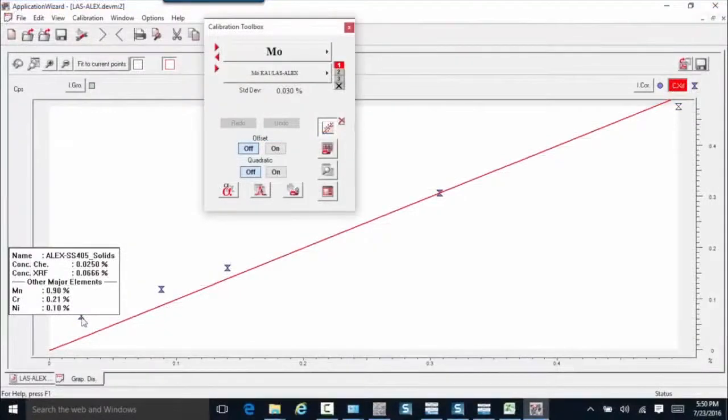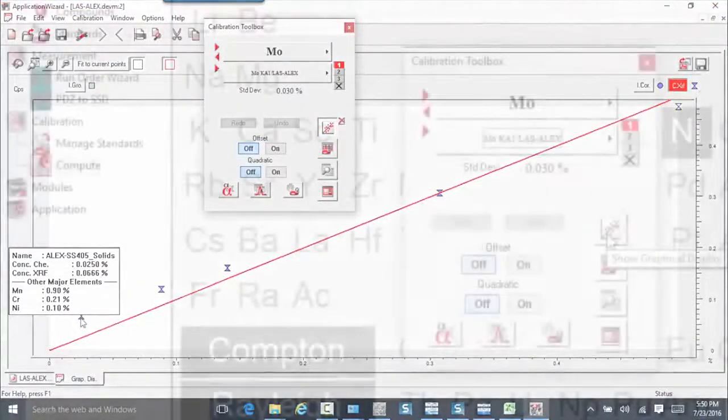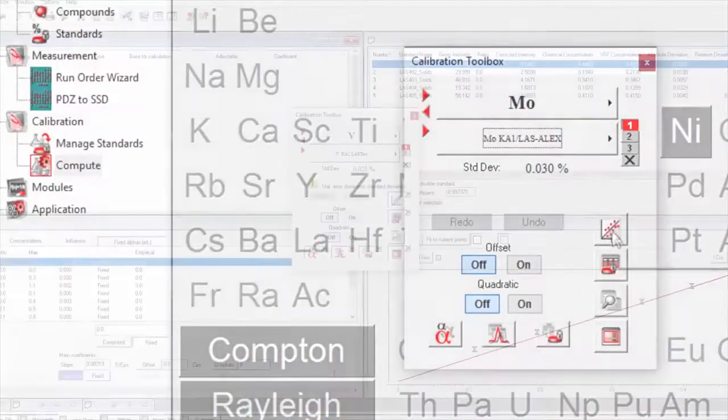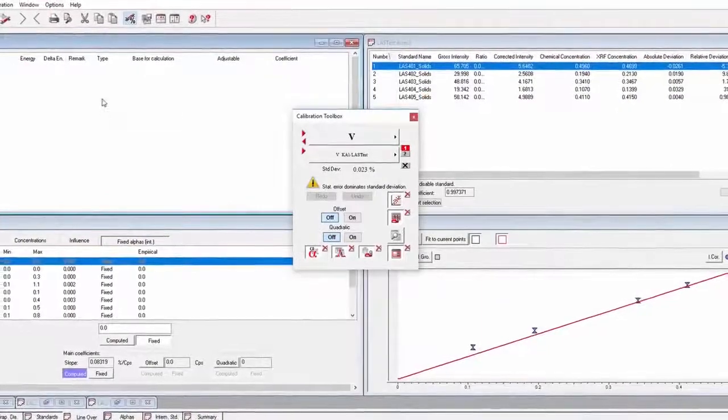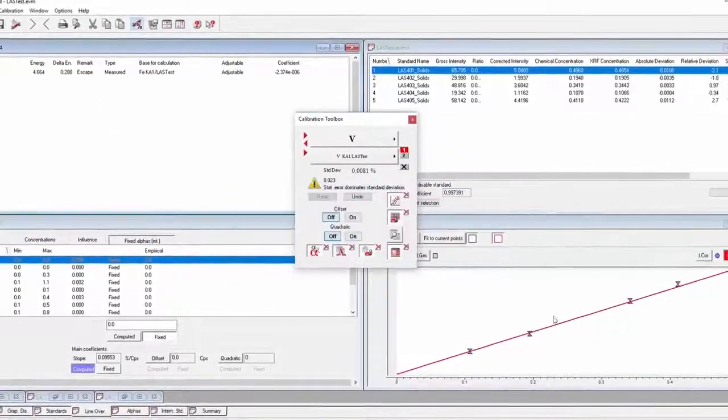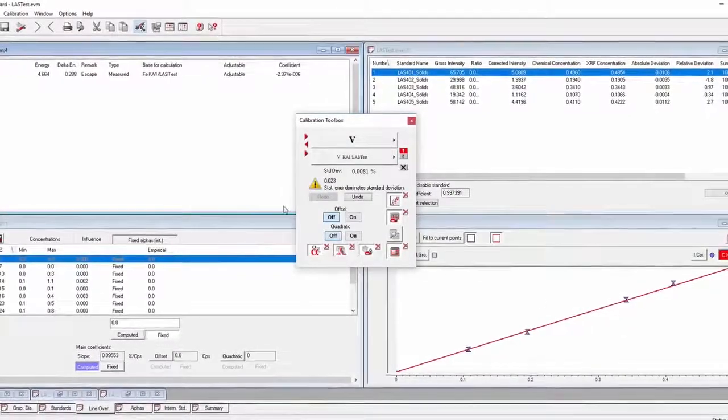Optionally available EasyCal PC software allows for user-defined and site-specific empirical calibrations. EasyCal incorporates Lucas-Tooth modeling and provides comprehensive tools for inter-element corrections. The instructional wizard walks the user through EasyCal's calibration process using a graphical interface.